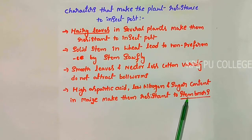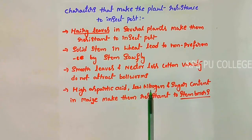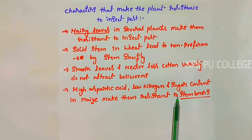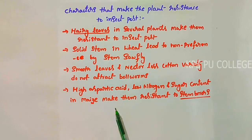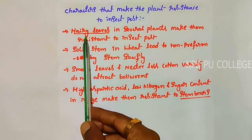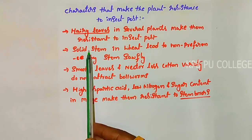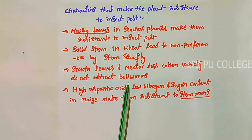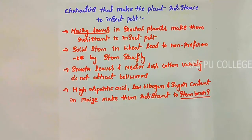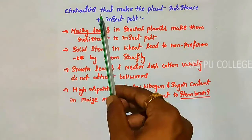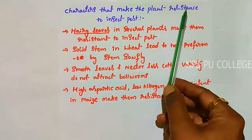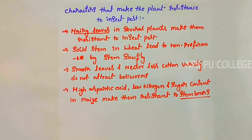These are the characters that make the plant resistant to insect pests: high aspartic acid, low nitrogen and sugar content in maize make them resistant to stem borers. These represent morphological and biochemical features critical for insect pest resistance in crop plants.